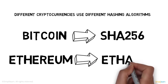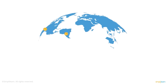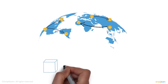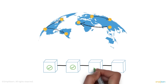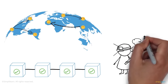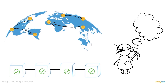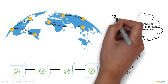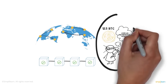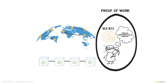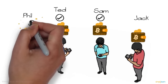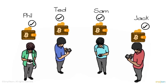Different cryptocurrencies use different hashing algorithms — Bitcoin uses the SHA-256 algorithm, while Ethereum uses one known as Ethash. These transactions and many others taking place around the world are validated and then added block by block. The people who validate these blocks are called miners. To validate and add a block, miners must solve a complex mathematical problem. The first miner to solve it adds the block to the blockchain and is rewarded with 12.5 bitcoins. This process is called proof of work, and adding a block is called mining.